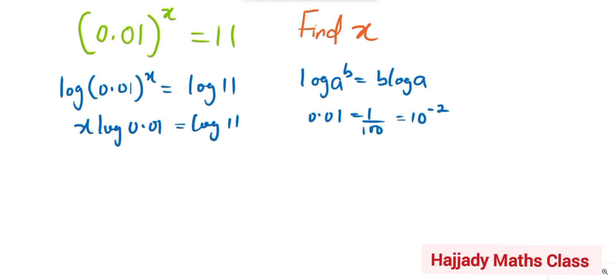So using the same thing here, we are going to change 0.01 to 10^(-2). So we have x log(10^(-2)) = log 11. Applying the first law here, which is log a^b, the same thing will be used here. So we have -2x log 10 = log 11.